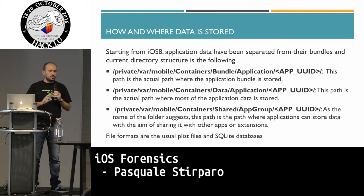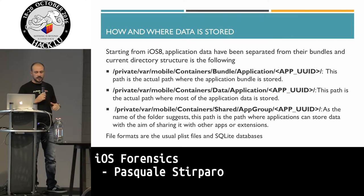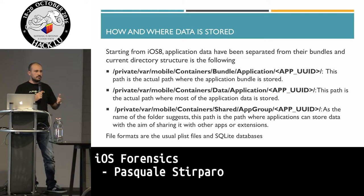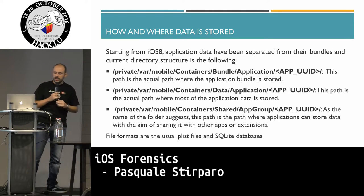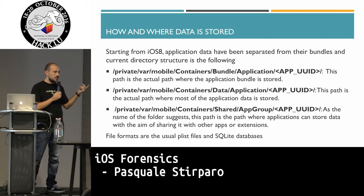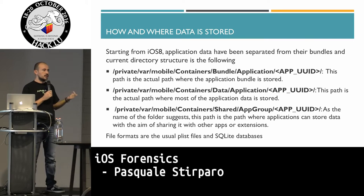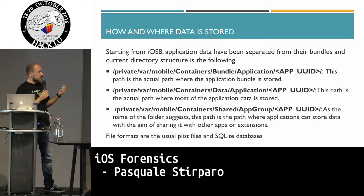A bit of quick background information that is needed. When you manage to have full access to the device and you want to know where the data are, since iOS 8, Apple decoupled the location of the bundles of the application from the data. We get a bundle folder which contains the bundle, a data folder where most applications store their data, and a shared app group folder which is the location where applications store data they want to share or use to interact with other applications. It's very important not to forget about this last folder.